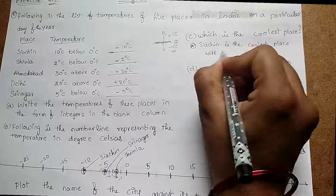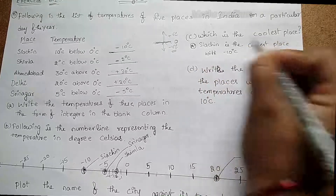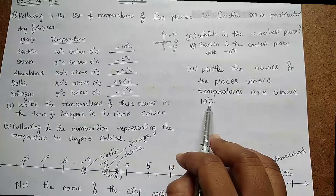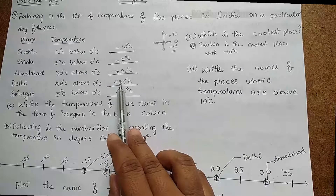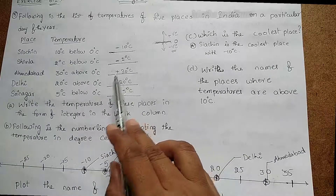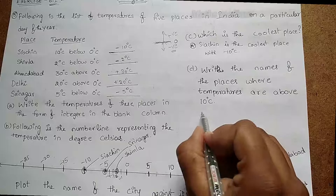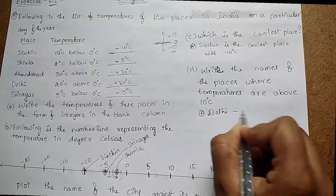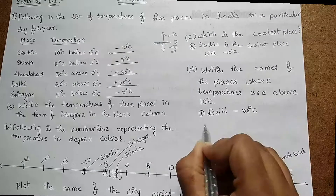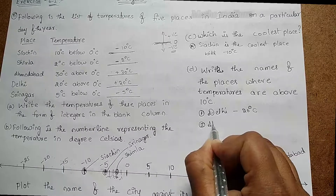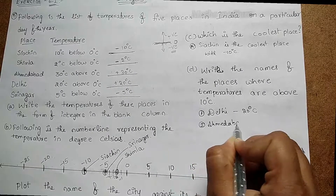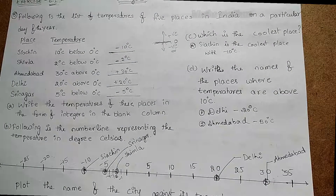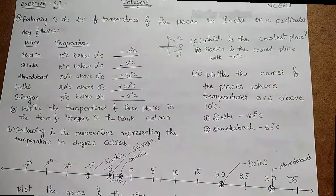Next question: write the names of the places where temperatures are above 10°C. We have two places — Delhi with 20°C and Ahmedabad with 30°C. Those are the answers to this question. I hope you understood this session.